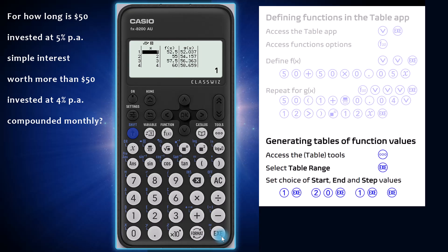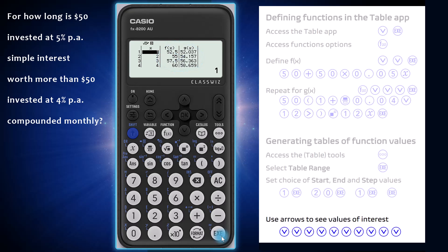It appears that, initially, the simple interest investment is worth more than the compound interest investment. To see what happens to these investments as time passes, arrow down. It looks like, somewhere in between t equals 10 years and t equals 11 years, the simple interest investment stops being worth more than the compound interest investment and starts being worth less.